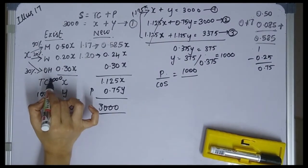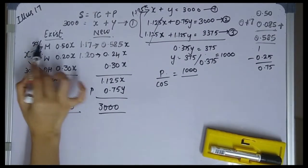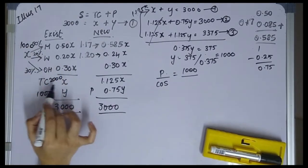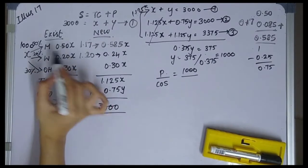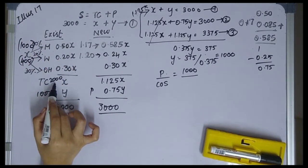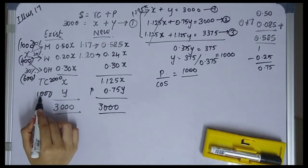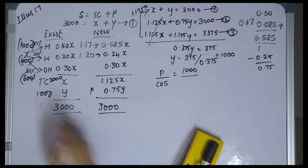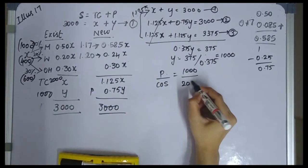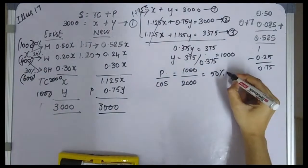So total cost incurred is 2,000. Breaking it down: material at 50% of 2,000 is 1,000; wages at 20% of 2,000 is 400; overheads at 30% of 2,000 is 600. Total cost is 2,000, profit is 1,000, and sales is 3,000. The profit to cost of sales ratio is 1,000 divided by 2,000, which is 50%.